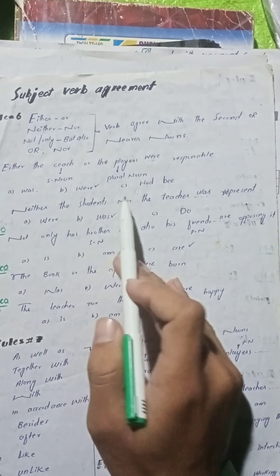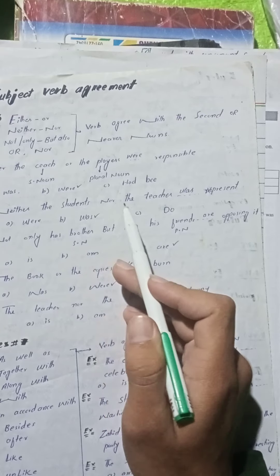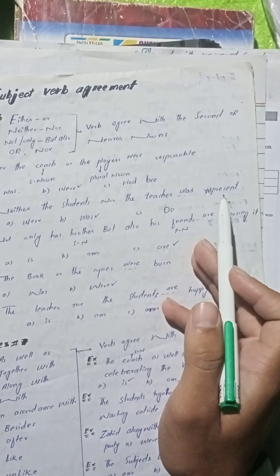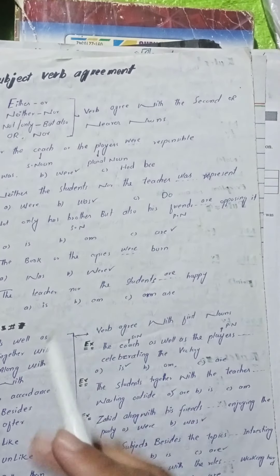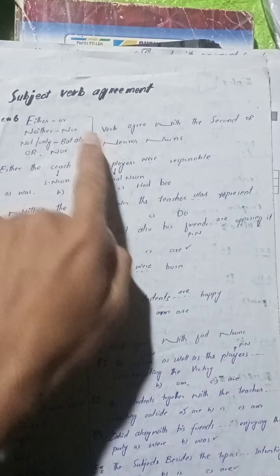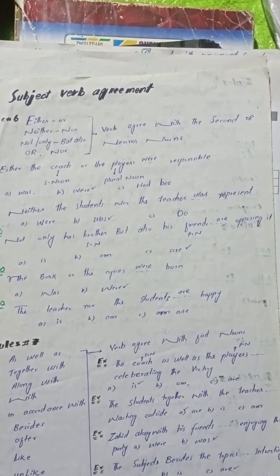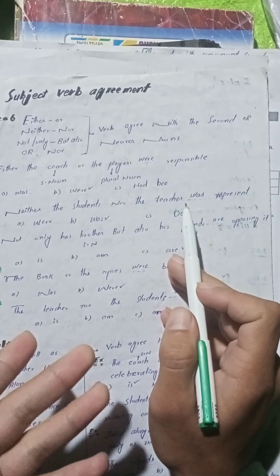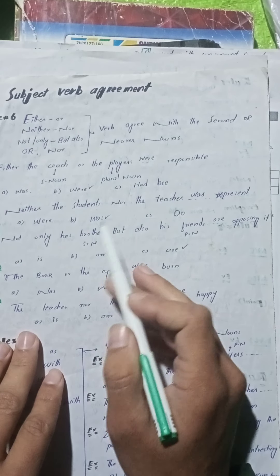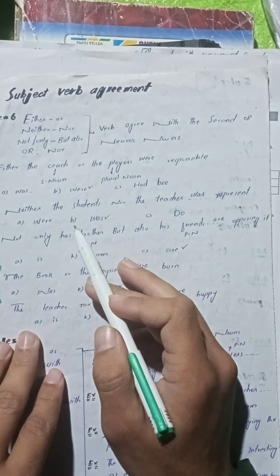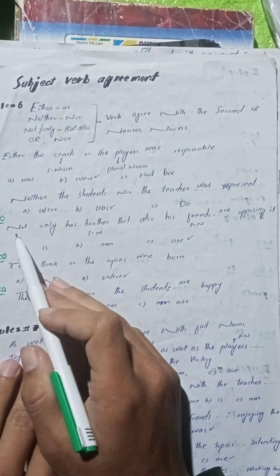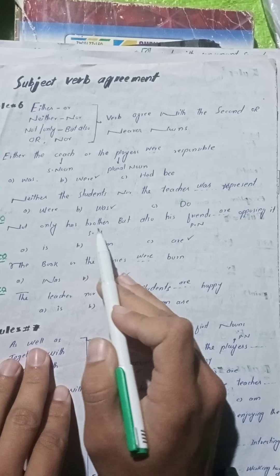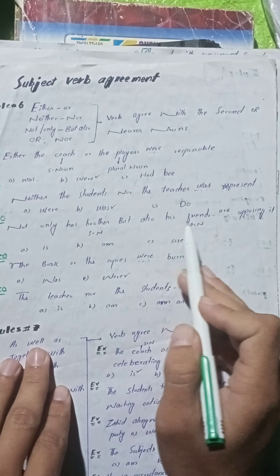MCQ number two: 'Neither the students nor the teacher ___ present.' Neither/nor آیا ہے تو verb، second noun کے ساتھ agree کرے گی۔ Second noun 'teacher' singular ہے تو singular form of verb use کرنا ہے۔ Right option: option B (was).